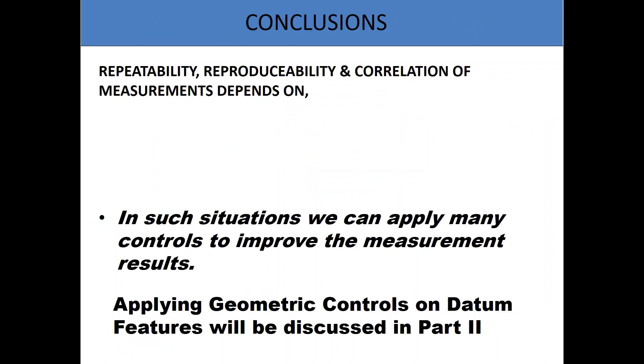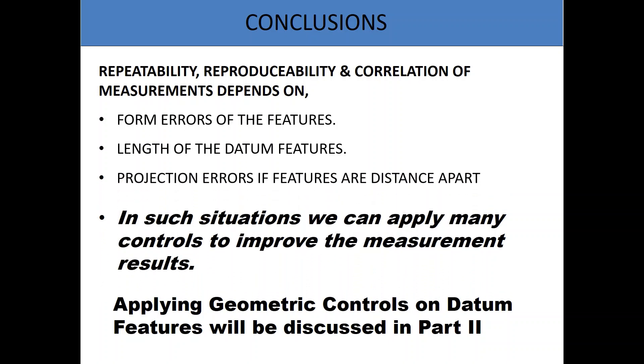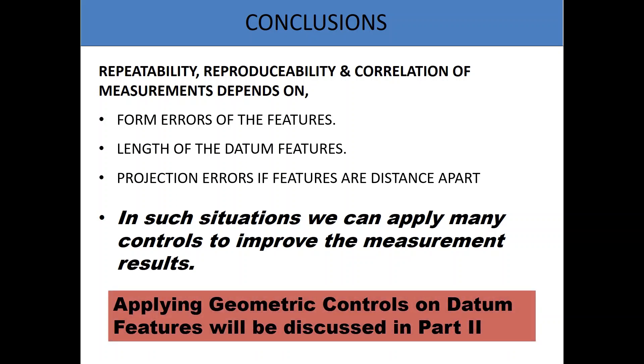Conclusions: repeatability, reproducibility and correlation of measurements depends on form errors of the features, length of the datum features, projection errors if features are distance different. In such situations we can apply many controls to improve the measurement results. Applying geometric controls on datum features will be discussed in part 2.